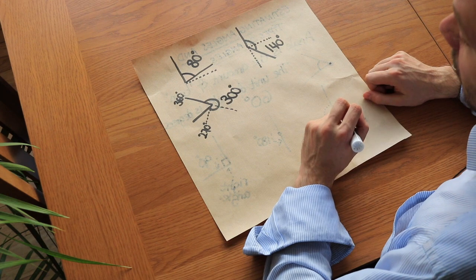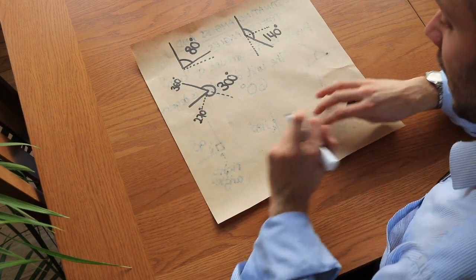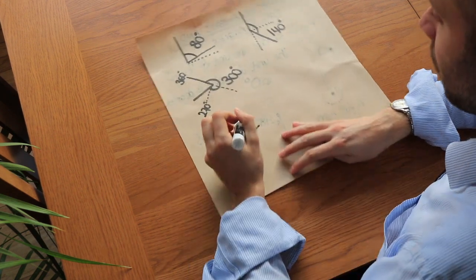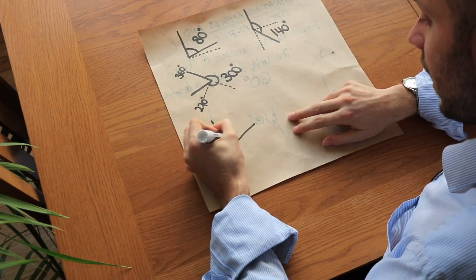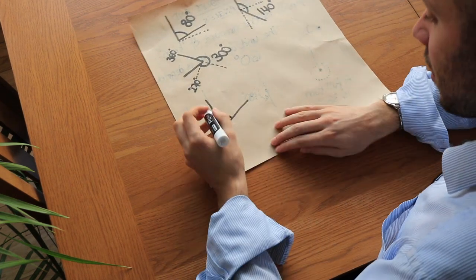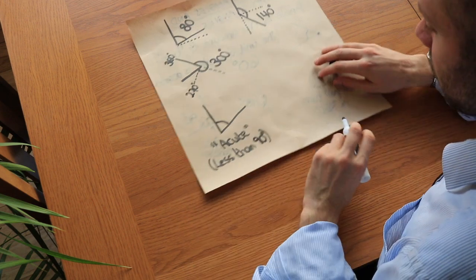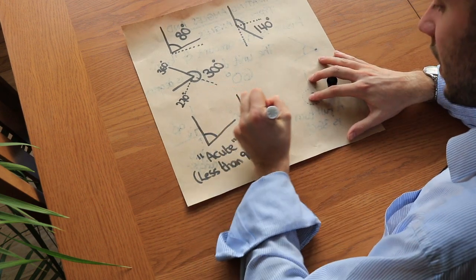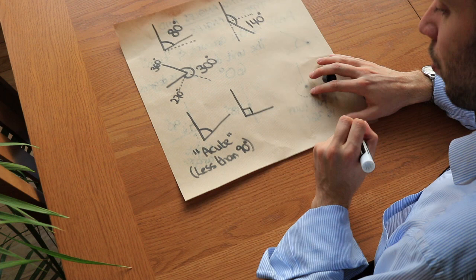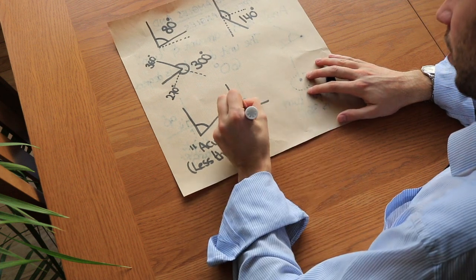Now we have special names for different types of angles. If the angle, like this one, is less than 90 degrees, we call that acute. If the angle is 90 degrees, then we already saw that is called a right angle.